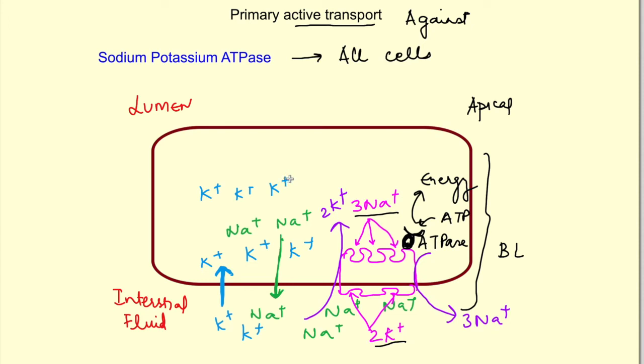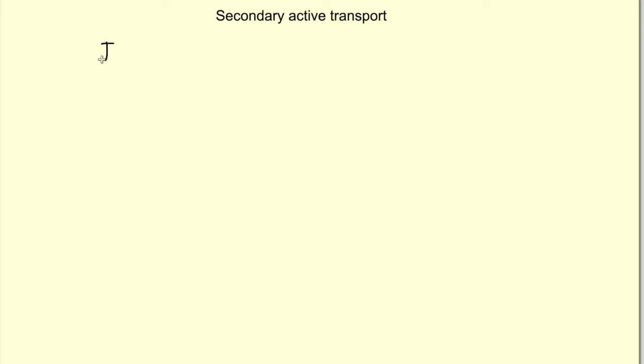Another example of primary active transport is hydrogen ATPase. It transports only a single ion — hydrogen — against its concentration gradient. Now let's come to secondary active transport.